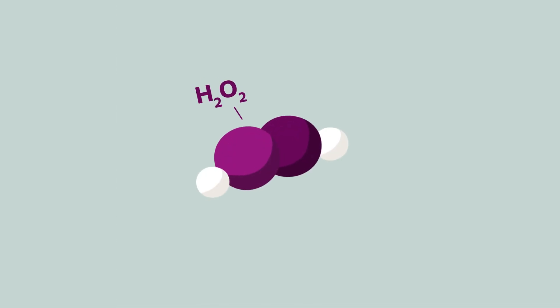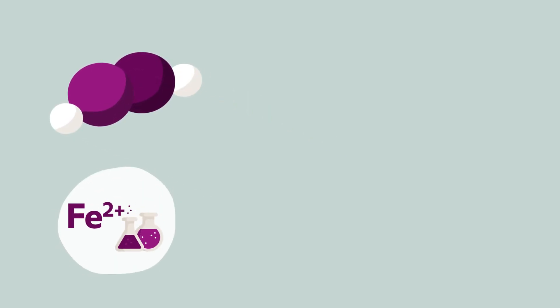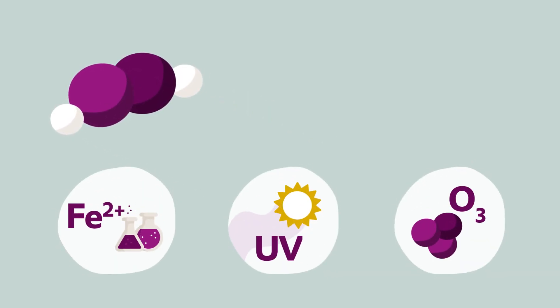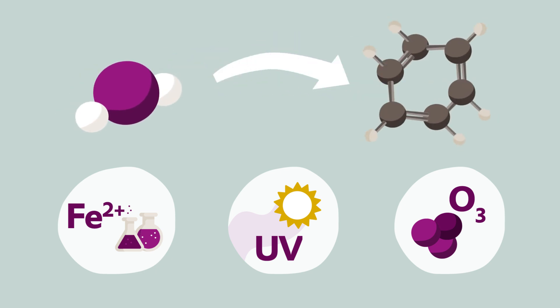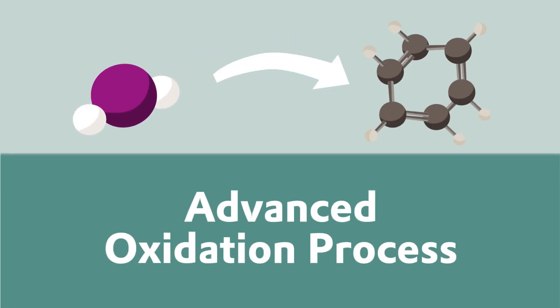Hydrogen peroxide, either alone or in combination with an activating agent such as an iron salt, UV light or ozone, can directly oxidize organic substances in what is known as an Advanced Oxidation Process.